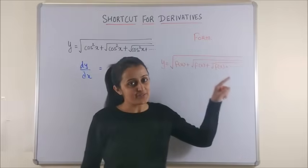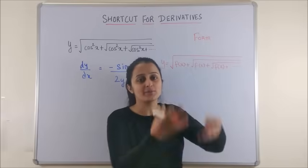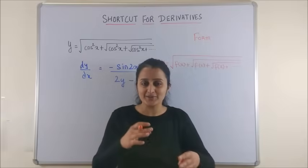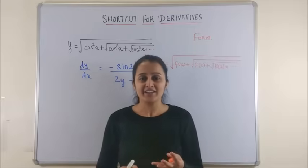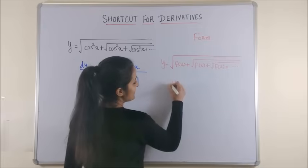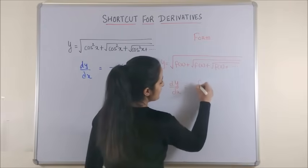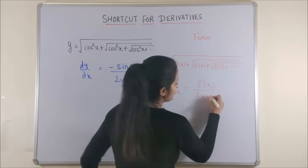In case you come across this form which says y is equal to square root of function plus square root of the function plus square root so on and so forth. That means it's actually an infinite series. Then all you need to do is the formula says dy by dx is derivative of the function upon 2y minus 1.